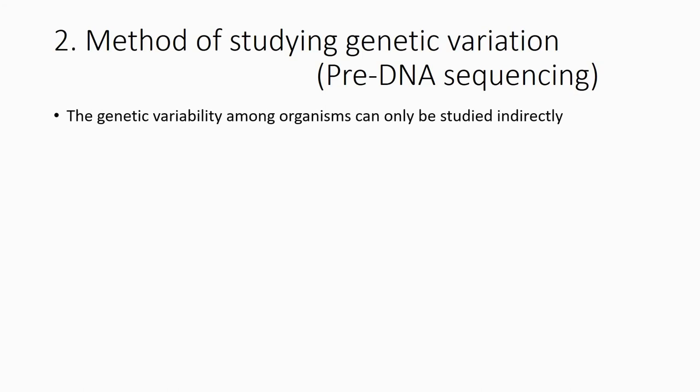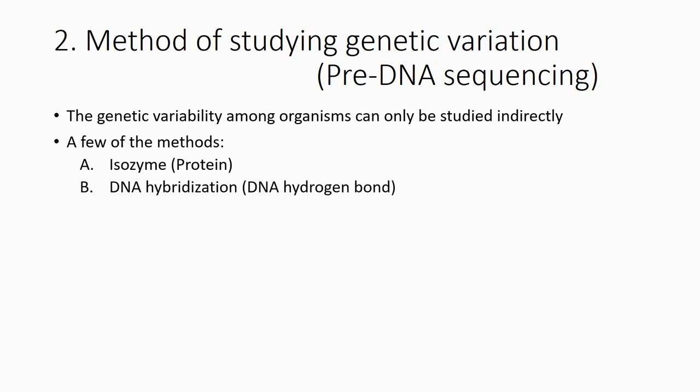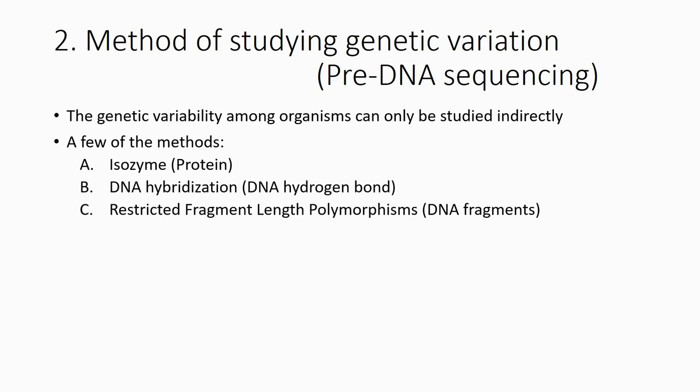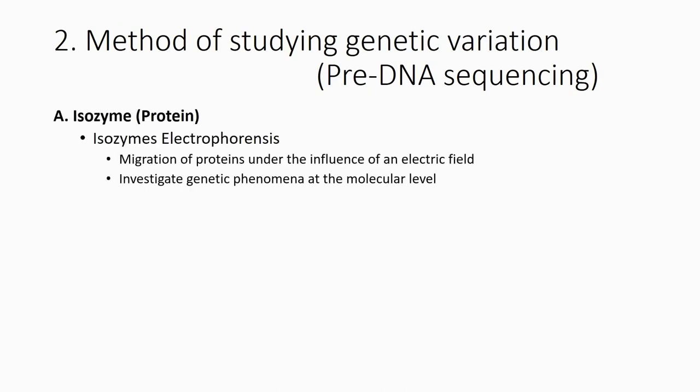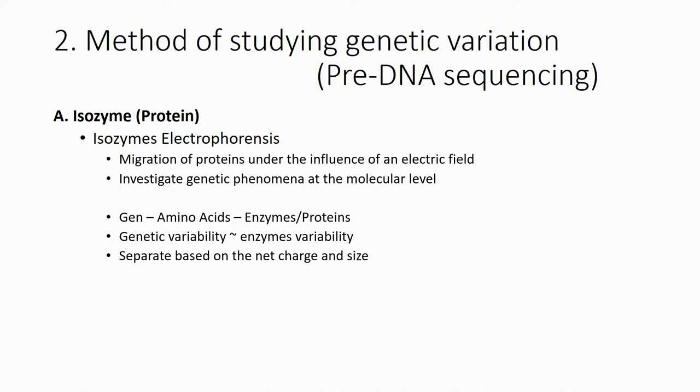So the genetic variability among organisms could only be studied in certain ways. There are a few methods: you can use isozyme analysis and also DNA hybridization, as well as RFLP. For isozyme analysis, it is the migration of protein under the influence of an electric field — exactly like electrophoresis, but the molecule used is protein. The separation is based on size and charge, so this is an indirect way to study genetic variability.